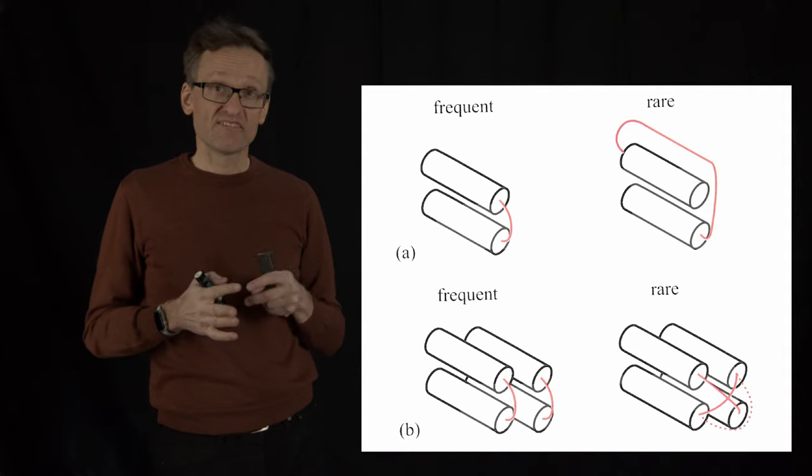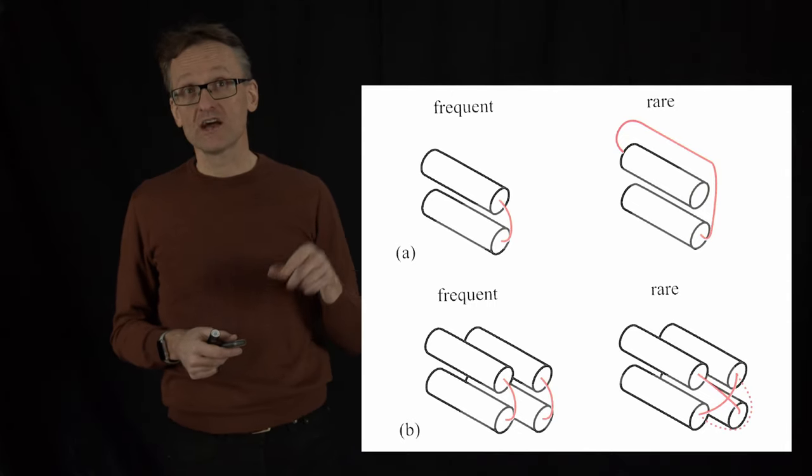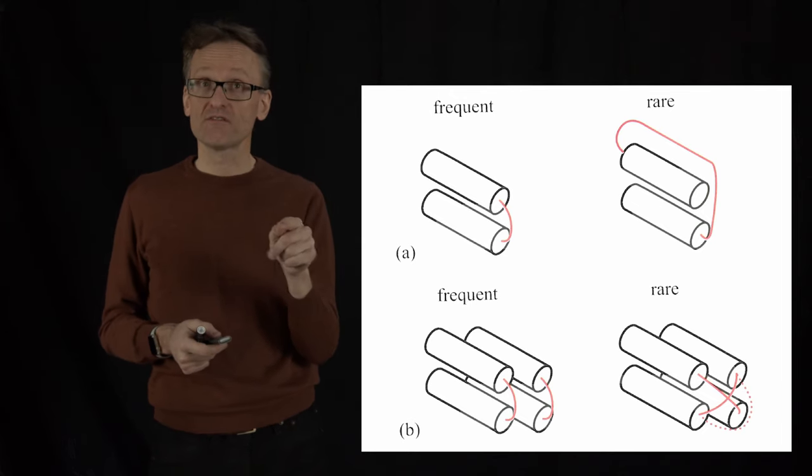If we're looking at loops, we have kind of the same concepts here. We have some very common patterns that if you're having an alpha helix that then crosses over to another alpha helix.